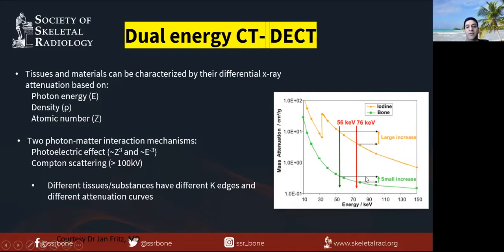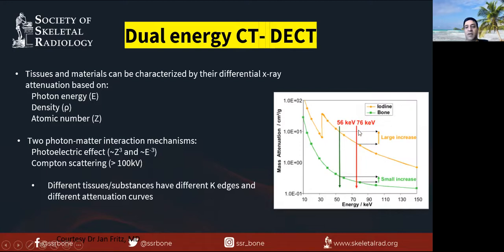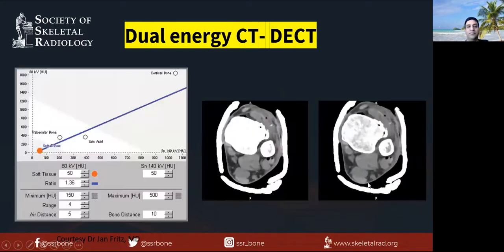Different tissues appear different at different energies. For example, if you look at iodine versus bone, when you move into the lower energy spectrum — this is the keV, which is mono-energy created from the dual energies scanned at 100 and 140 — these are broken down into different keV mono-energies, more pure energies. You can see there is more increase in attenuation between iodine at two different energy levels versus less increase for bone. When you plot these energies — 80 kV versus 140 kV — different tissues, molecules, and atoms lie at different places along this curve, so they can be separated out.